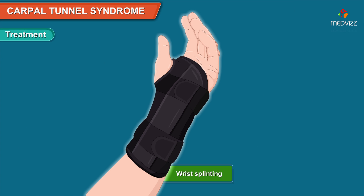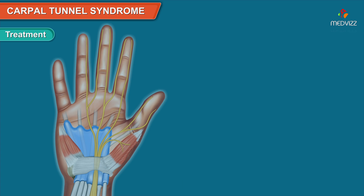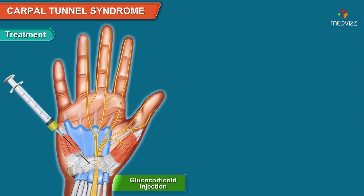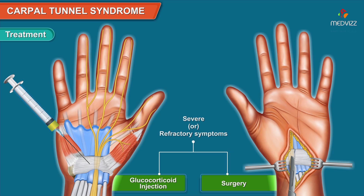Treatment involves wrist splinting for mild cases, especially during the night, or throughout the day if the patient feels constant discomfort. Glucocorticoid injections or surgical interventions for severe or refractory symptoms can also be undertaken.